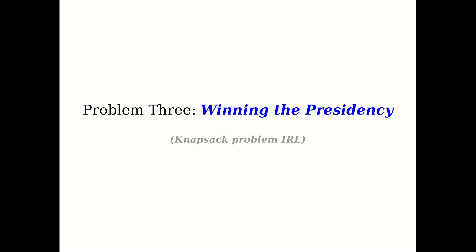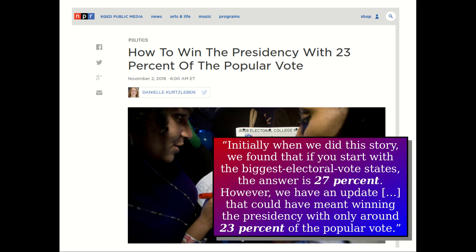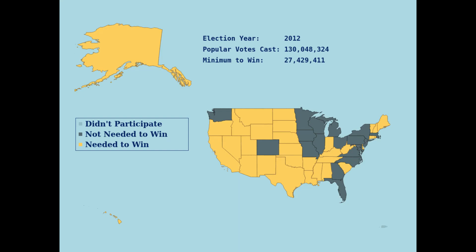The last problem is called Winning the Presidency, which is an applied version of the knapsack problem. It's motivated by an NPR story from 2016 stating that the Electoral College setup meant you could win just 23% of the popular vote and still become president — based on 2012 election data. A reader even wrote in with a better strategy at 23%, and it turned out the true optimum was 21.1% of the popular vote, achieved by winning the states highlighted in gold.